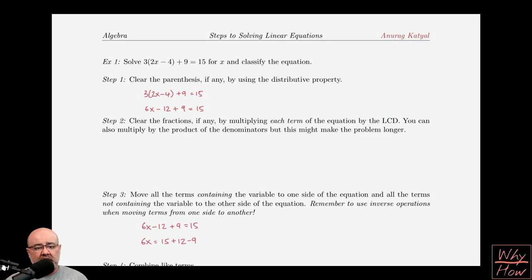As before, step 1 is to clear the parentheses, if there are any, by using the distributive property. All we have to do is take this 3 and distribute it to both the terms, or all the terms, that are inside the parentheses. So 3 times 2x gives us 6x, and then 3 times negative 4 gives us negative 12. The 9 comes along for the ride, and as does the 15. Nothing is happening with those terms. All we're doing is clearing the parentheses in the first step.